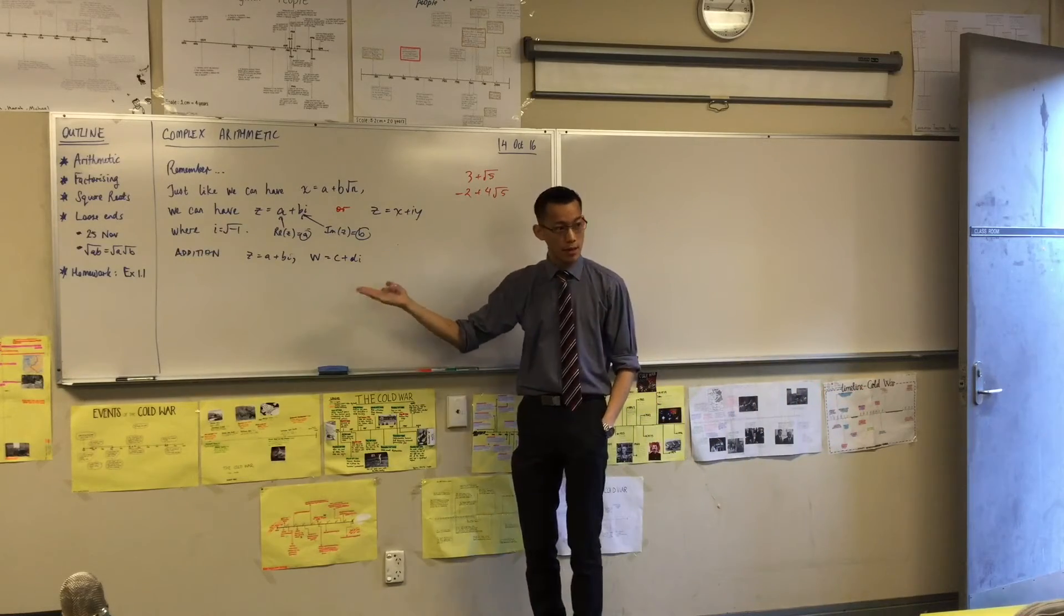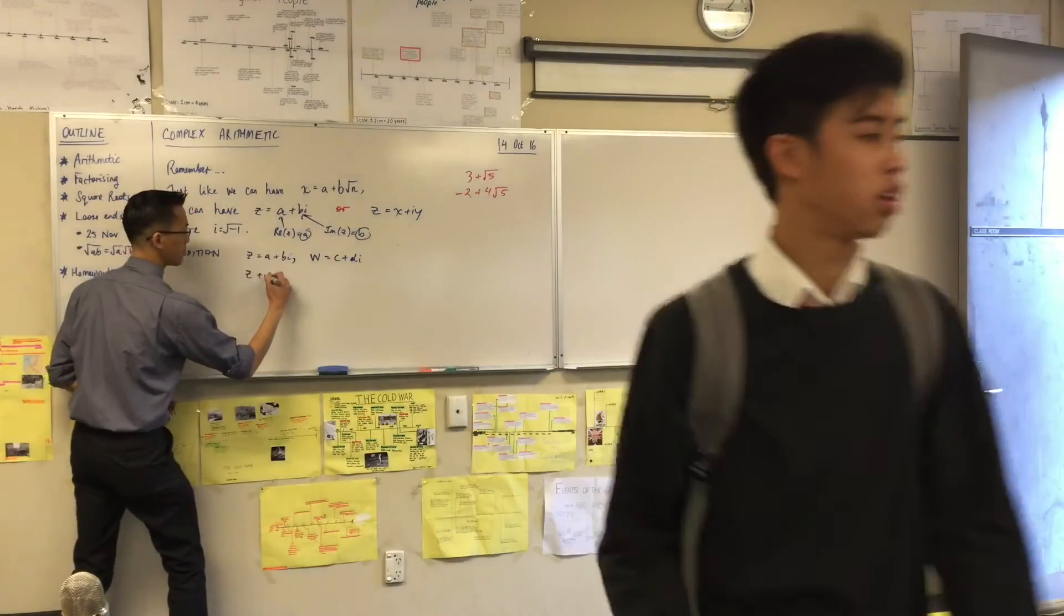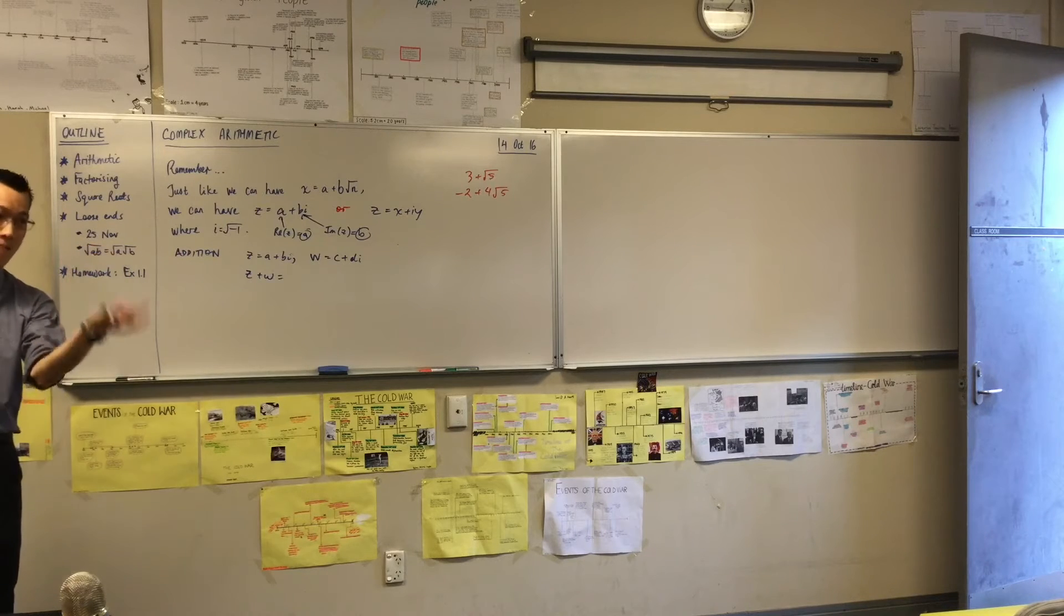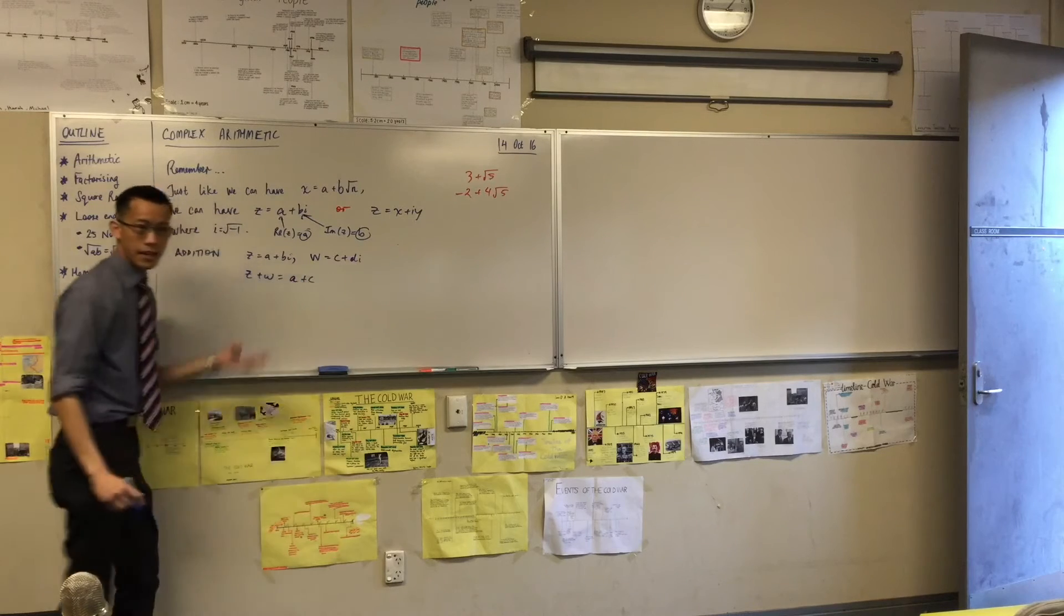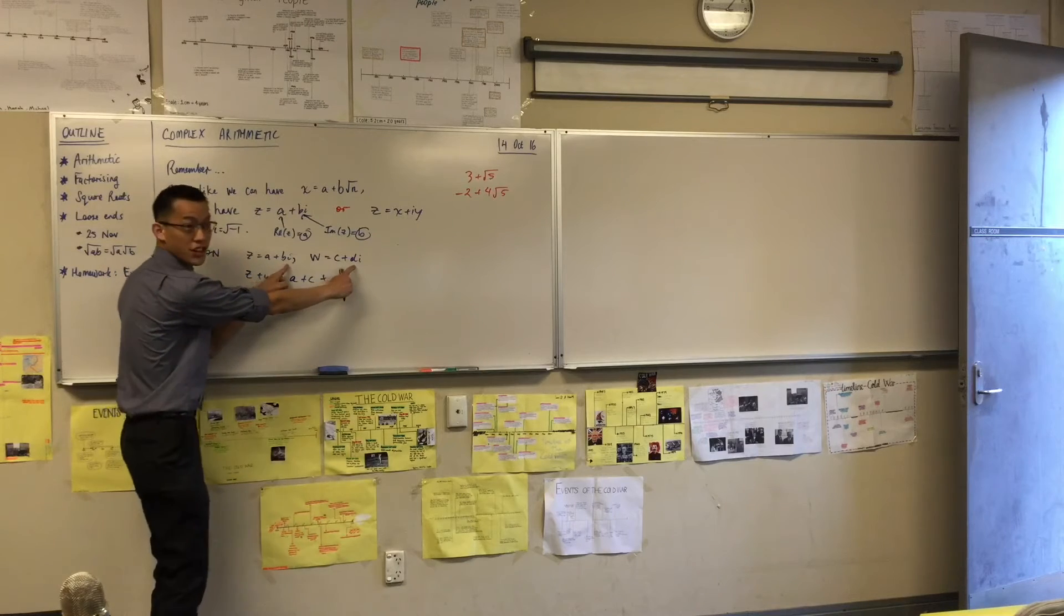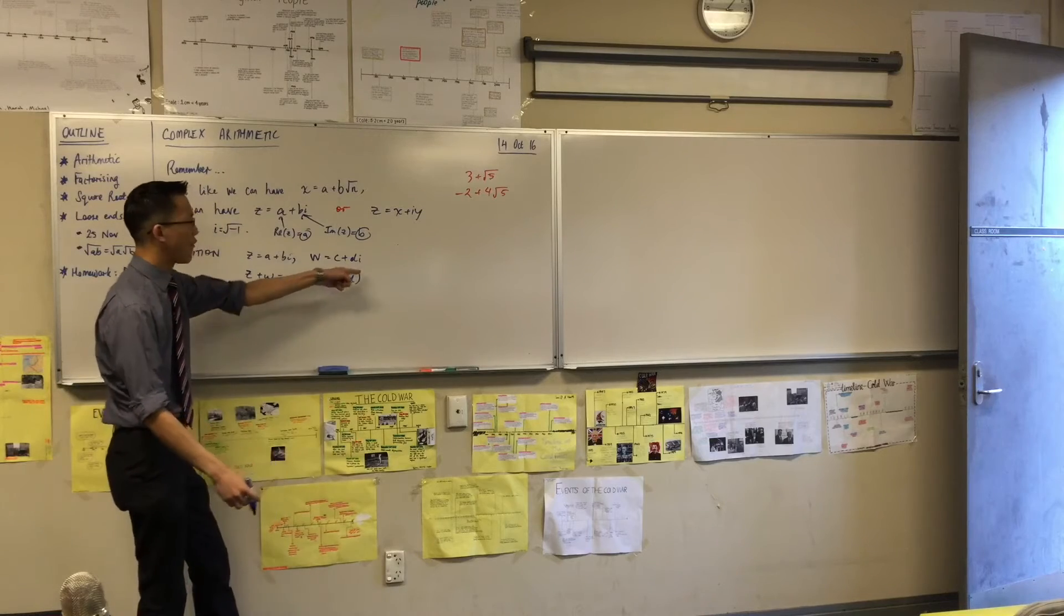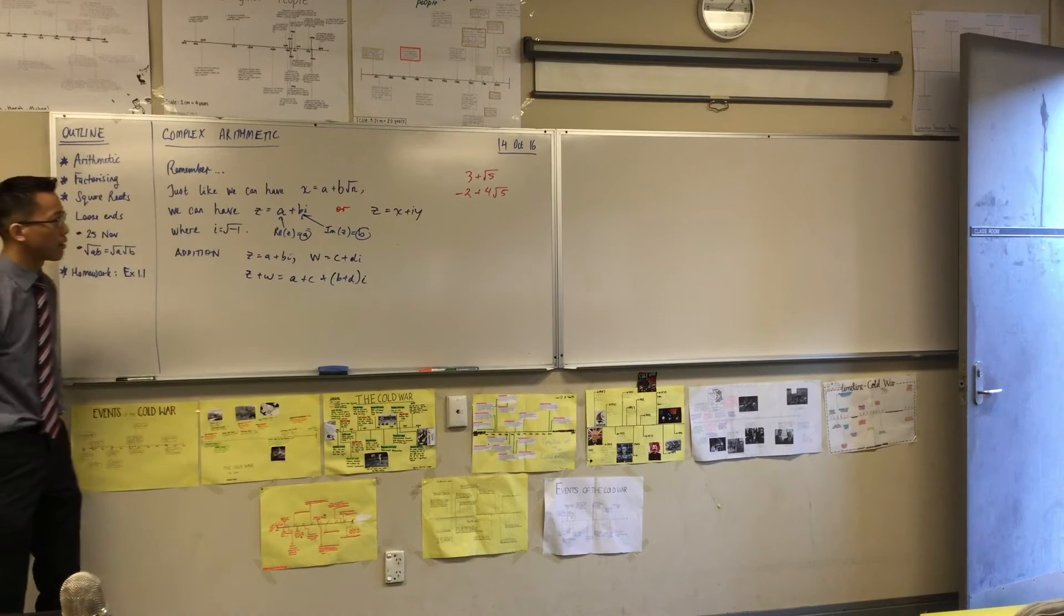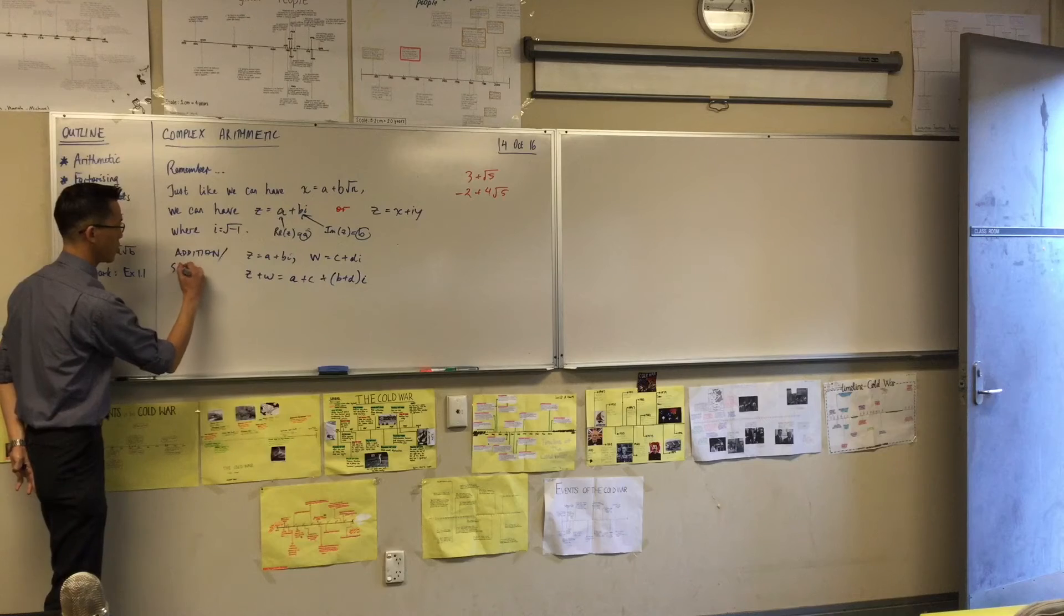And I'm going to do exactly the same thing here with addition, right? So z plus w, I'm going to take the real parts, add them, and then I'm going to take the imaginary parts, and add them. Does that make sense? So I'm going to go a plus c, there's my real component, right? And then I say, well, here are my imaginary components over here, b plus d, and I can factorize out that imaginary unit. So just like with irrational numbers, this is the same, and subtraction is just addition in reverse.